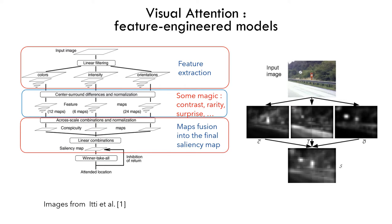So this is the first model, the one from Laurent Itti in 1998. This is a pipeline that all models used for maybe 15 years. You have a first part where you have feature extraction — for example, color features, intensity features, orientations at different scales. Then you have a second step, the magic step, where you will compute the contrast or the rarity or the surprise that these features produce. For Laurent Itti, it's a center-surround difference — a kind of local contrast.